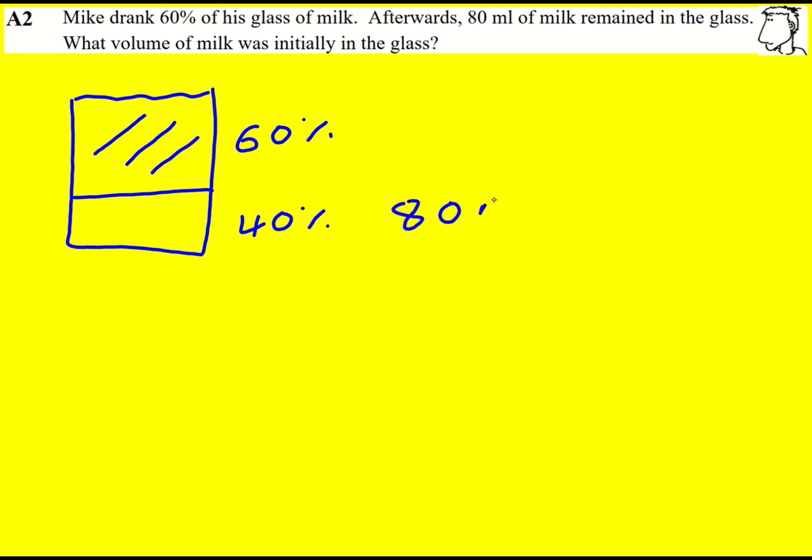That was worth 80 millilitres, so we're asked to work out what 100% was. We've got 40%, then we want to work back to 100%, or we could work out 10% by dividing 40 by 4, therefore 80 by 4 as well using the idea of proportion.